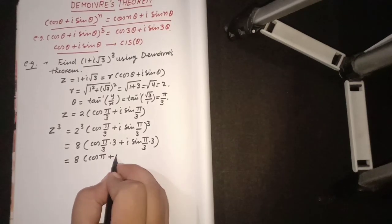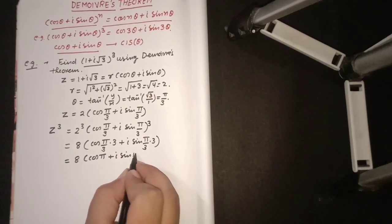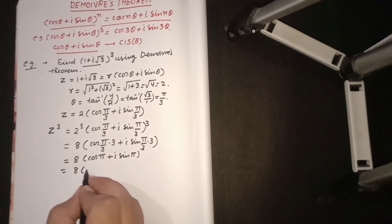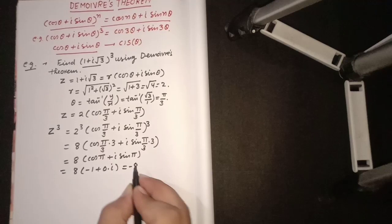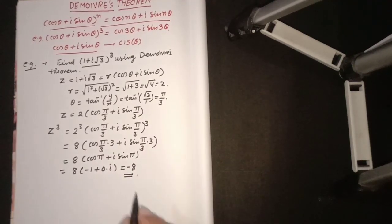And its value is -1 + 0i. So that will come out -8. So it is the solution. Such types of problems are asked in competitive examinations.